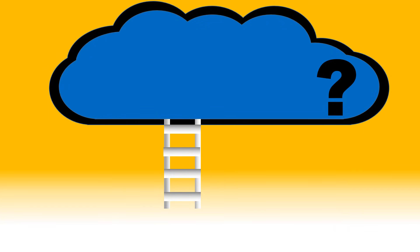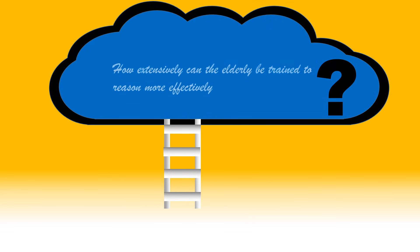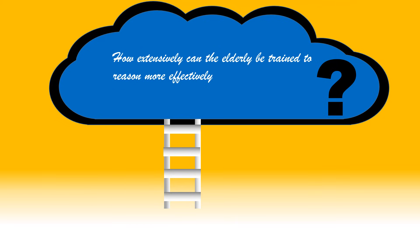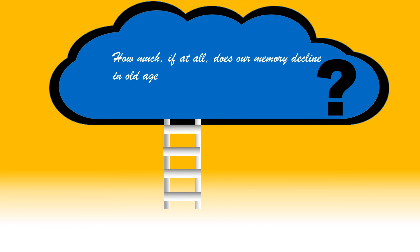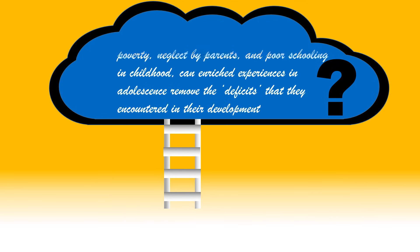The issues presented can be translated into questions that have sparked animated debate among developmentalists. Are girls less likely to do well in math because of their feminine nature or because of society's masculine bias? How extensively can the elderly be trained to reason more effectively? How much, if at all, does our memory decline in old age? Can techniques be used to prevent or reduce the decline? For children who experienced a world of poverty, neglect by parents, and poor schooling in childhood, can enriched experiences in adolescence remove the deficits that they encountered earlier in their development?